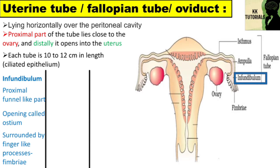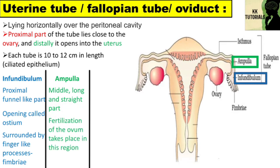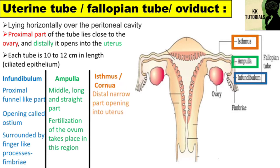The cilia and the movement of fimbria help in driving the ovulated egg to the osteum. Another part of the uterine tube is the ampulla, where fertilization of the ovum takes place. The third part of the fallopian tube is the isthmus, also known as the cornua, which is the distal narrow part of the duct opening into the uterus.